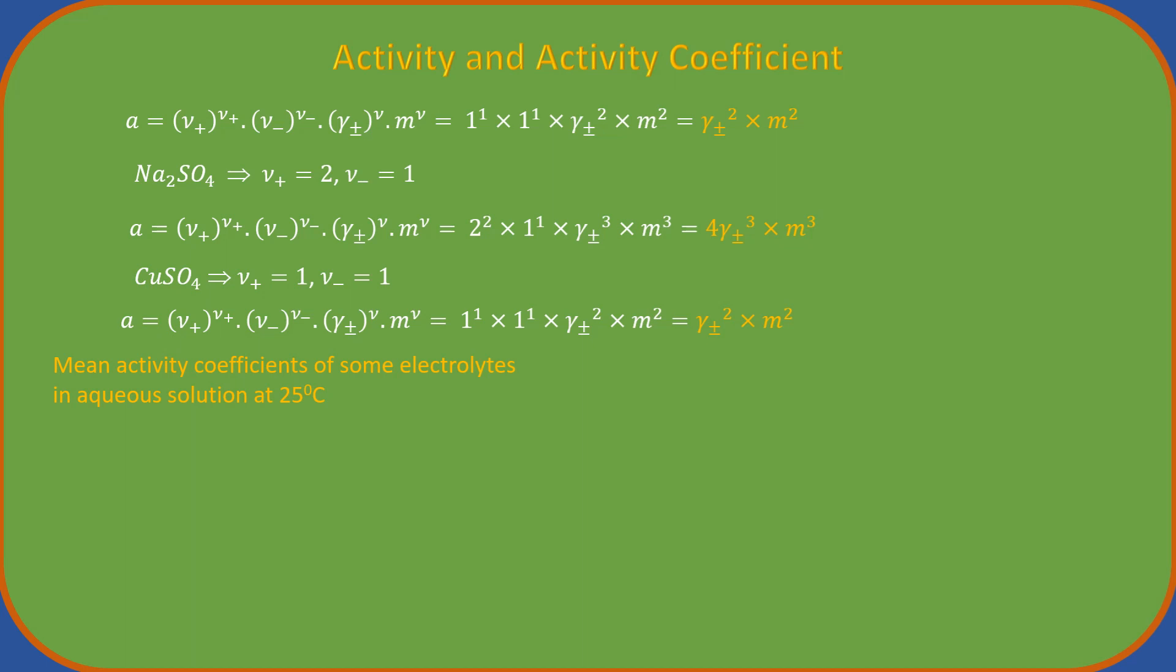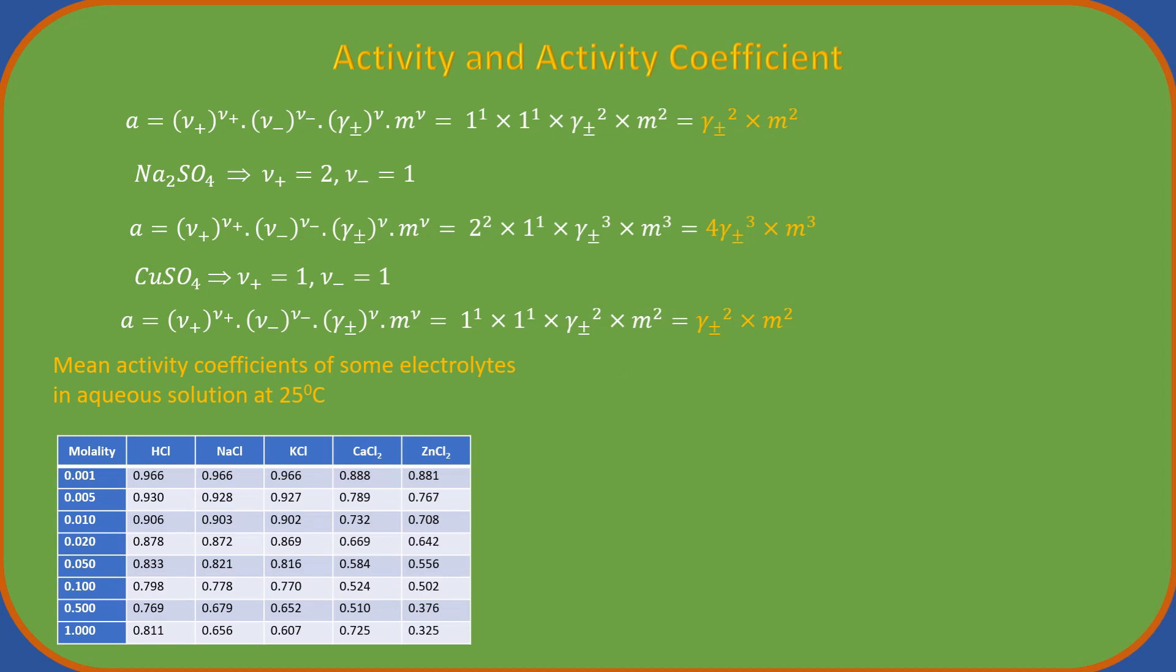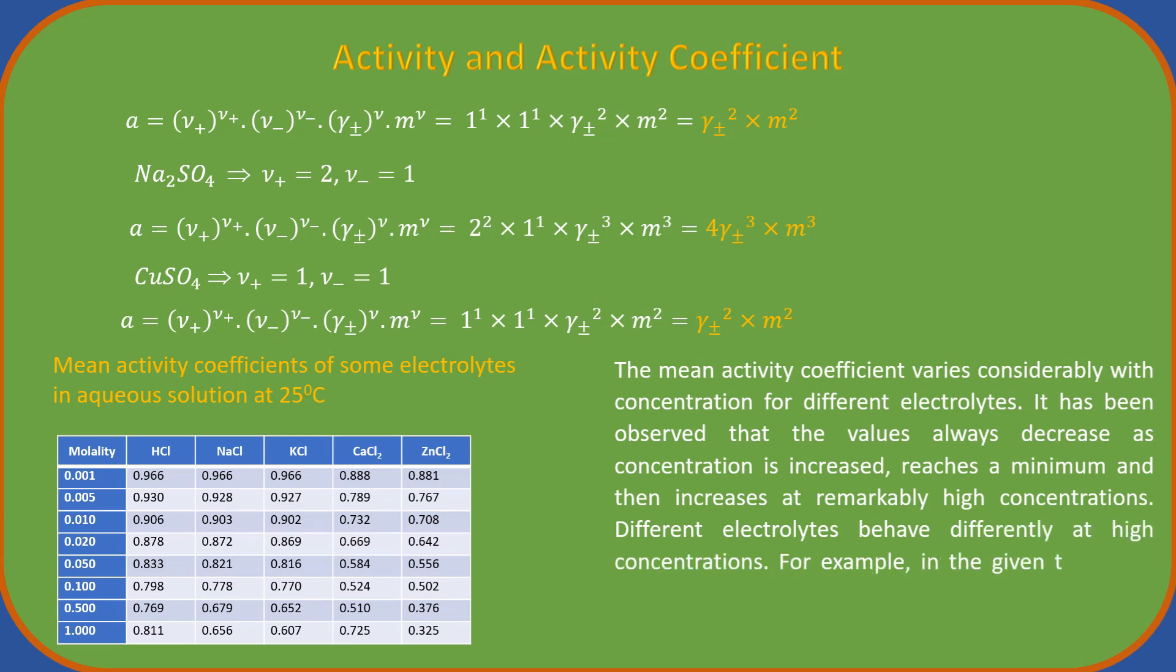Experimentally observed values of mean activity coefficients of some electrolytes in aqueous solution at 25 degree Celsius are shown in the following table. The mean activity coefficient varies considerably with concentration for different electrolytes. It has been observed that the values always decrease as concentration is increased, reaches a minimum and then increases at remarkably high concentrations. For example, in the given table, the values show an increase at 1 molal concentration for HCl and calcium chloride.